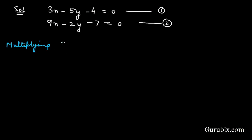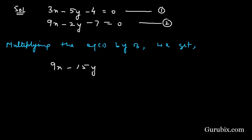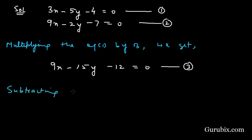Multiplying equation number 1 by 3, we get 9x − 15y − 12 = 0. We call this equation number 3. Now we shall subtract equation number 3 from equation number 2.